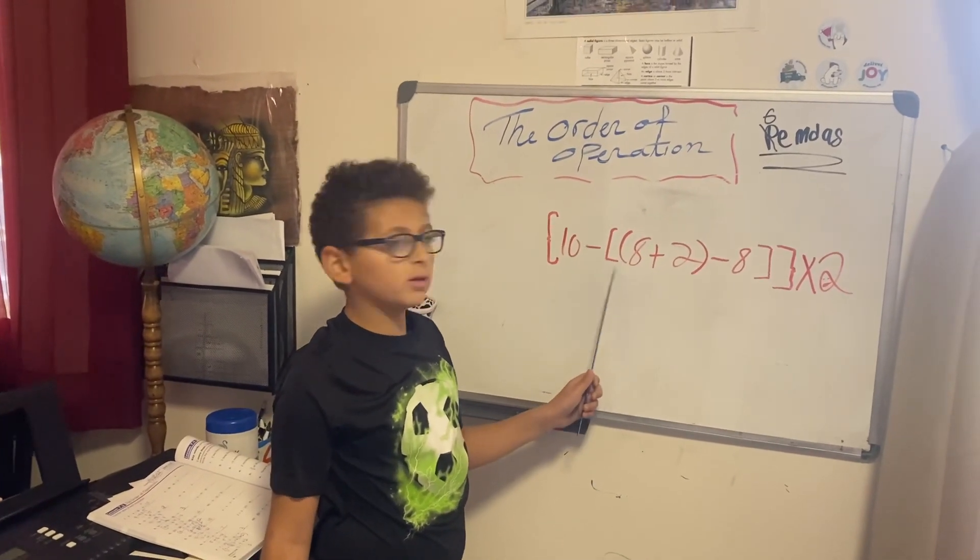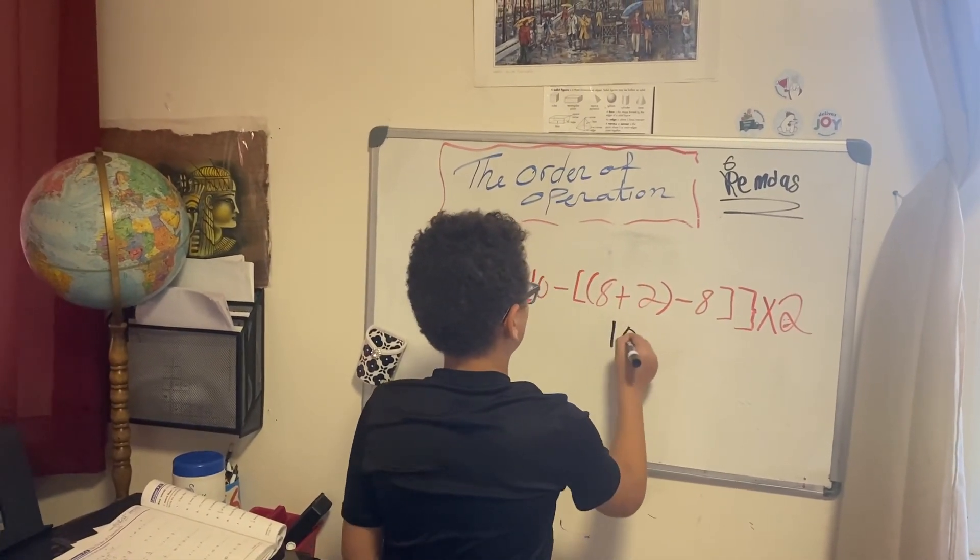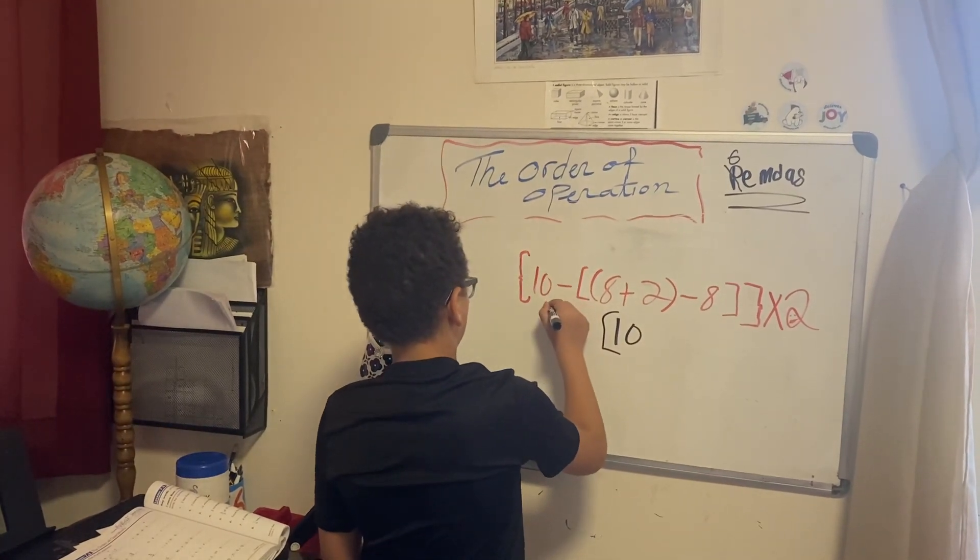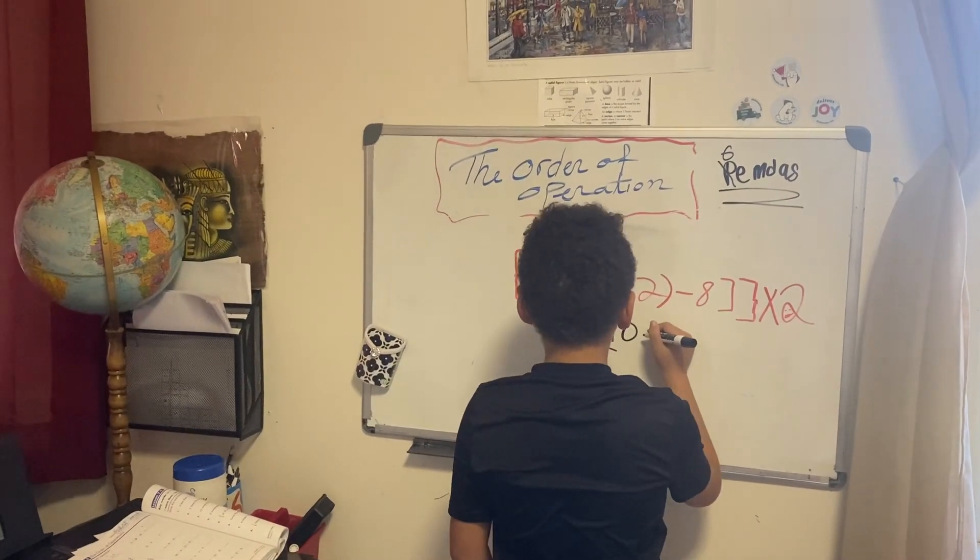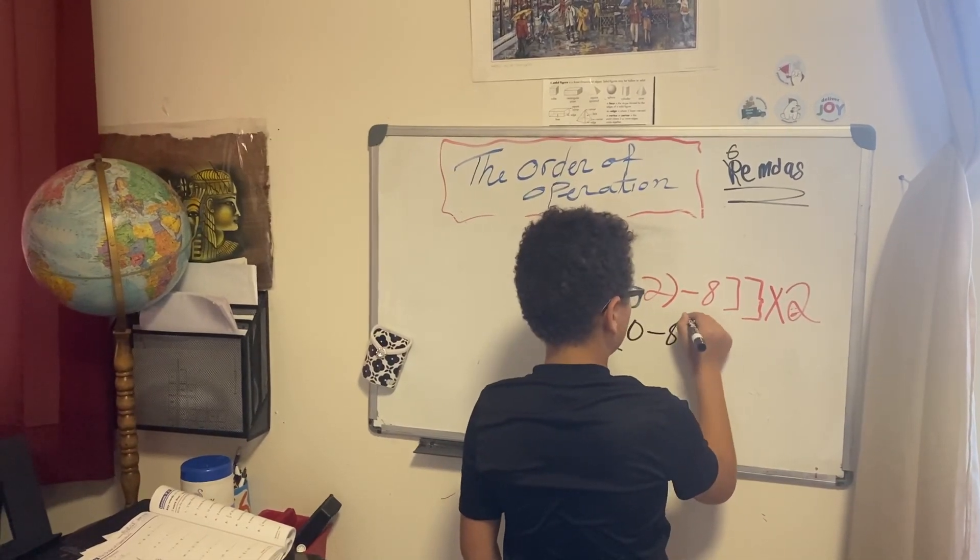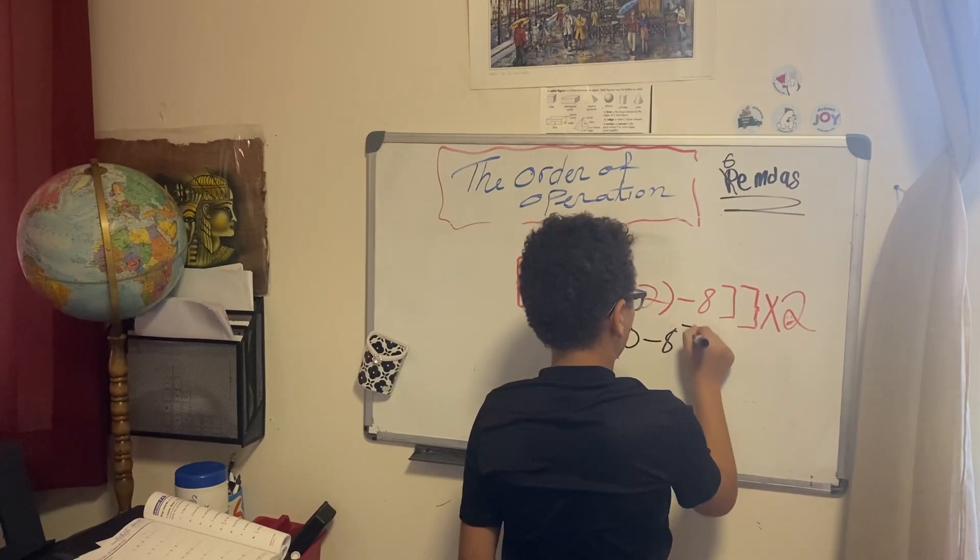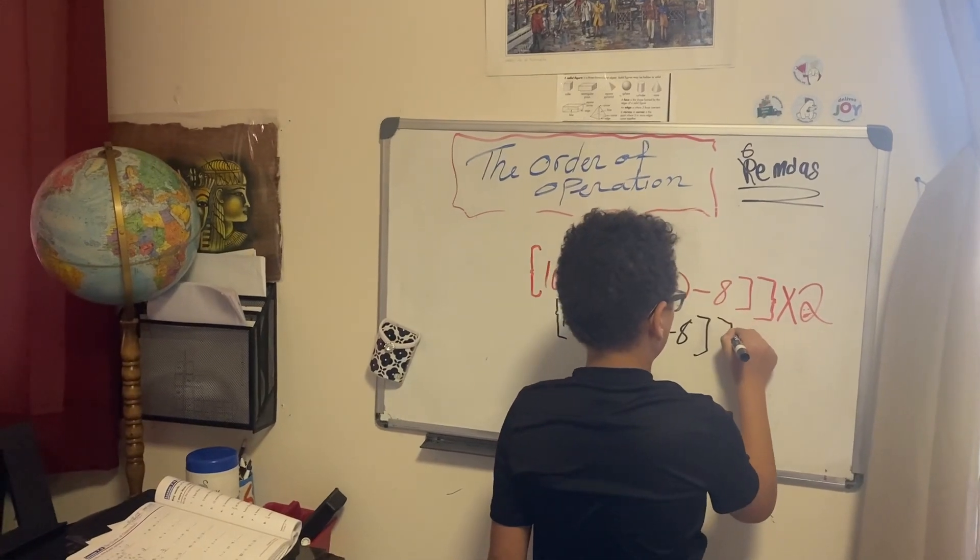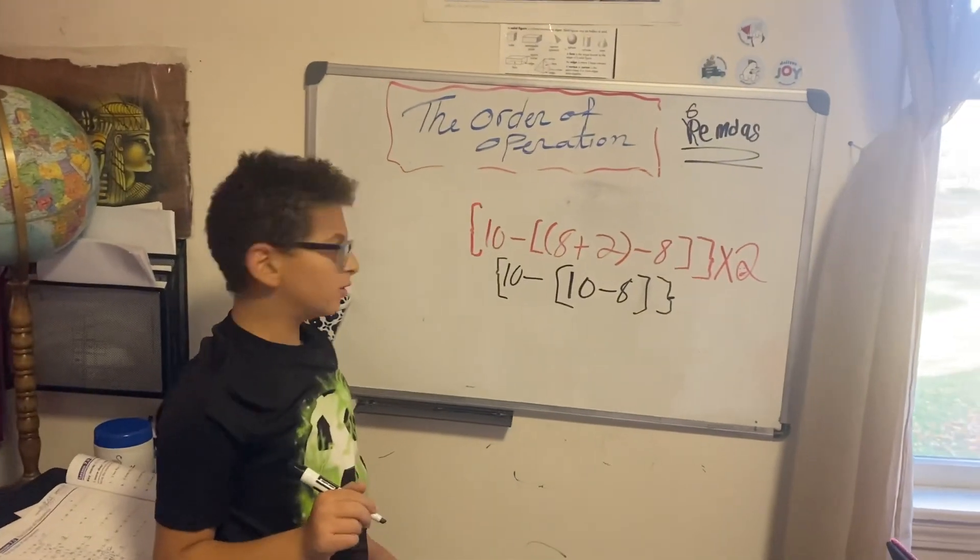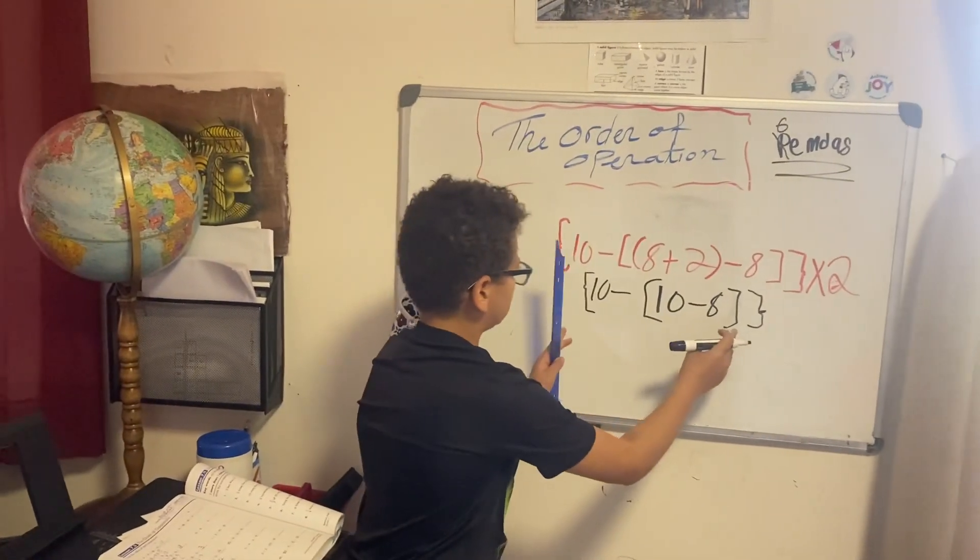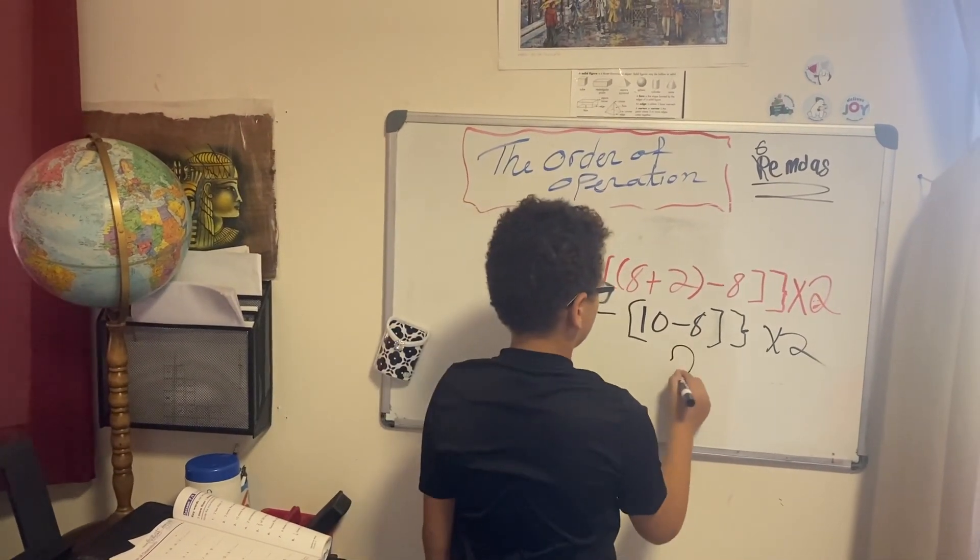This one is different than that one. We start with the one in between. So 8 plus 2 equals 10. Now we do minus 8.